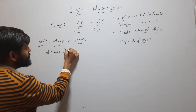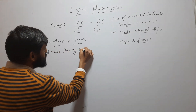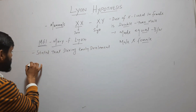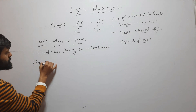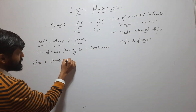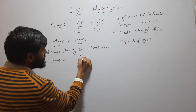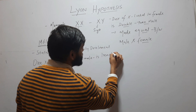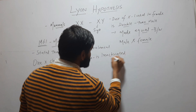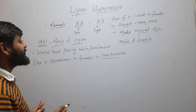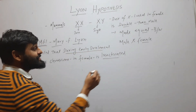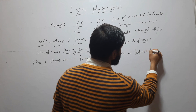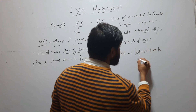...during early development, one X chromosome in females is inactivated. This chromosome is inactivated during early development, and this inactivation is random.